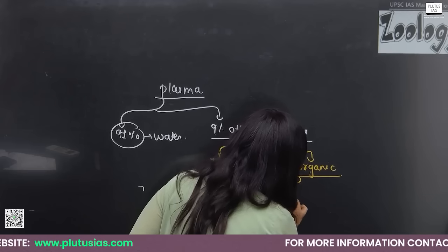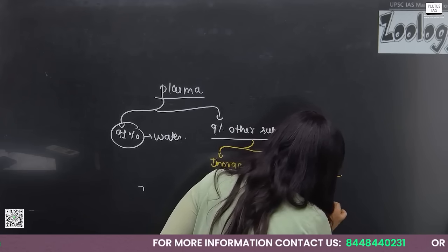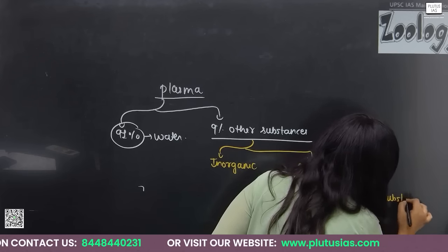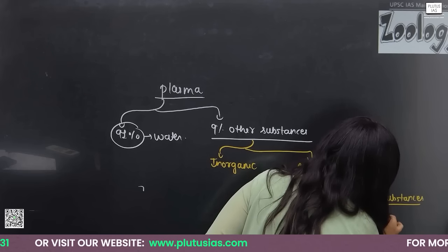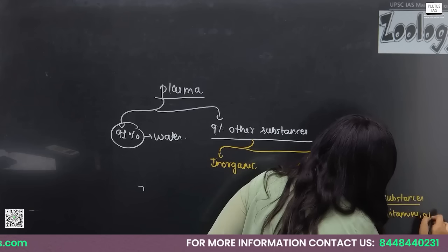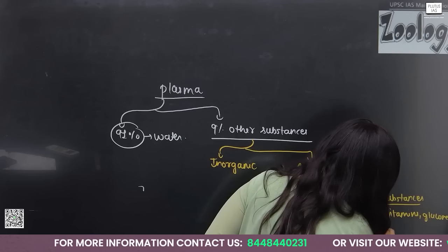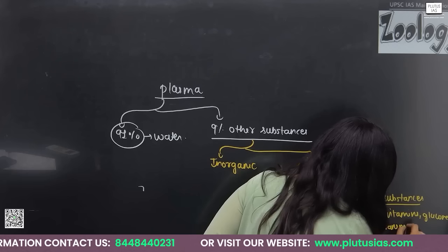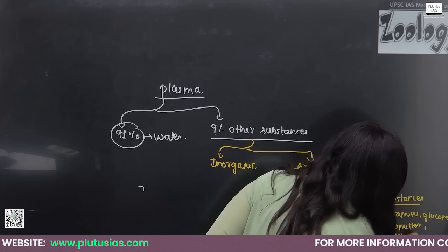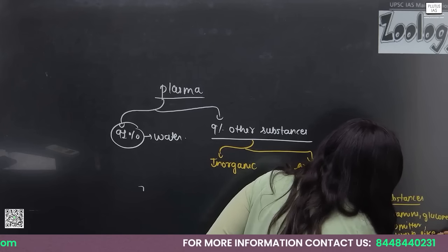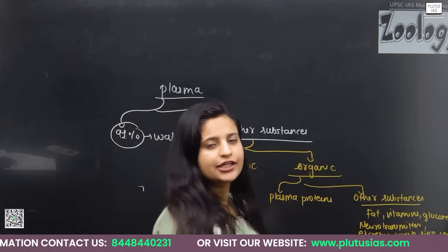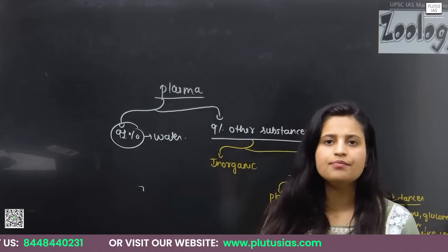In the organic substances, plasma proteins are present along with other substances like fat, vitamins, glucose, neurotransmitters, and excretory waste like urea. After digestion, the digested food goes into the blood, which transports it to each and every cell.